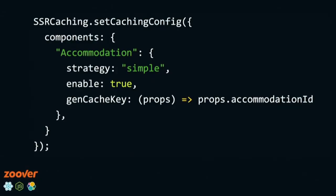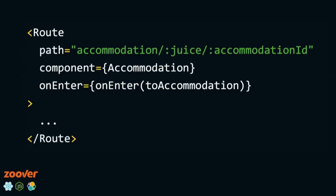Talking about code examples, it's quite easy to configure per-component caching. You can just define a list of components and the strategy of how they should be cached. In our case, we are aiming at caching per-route components, which with React Router is really straightforward to match.